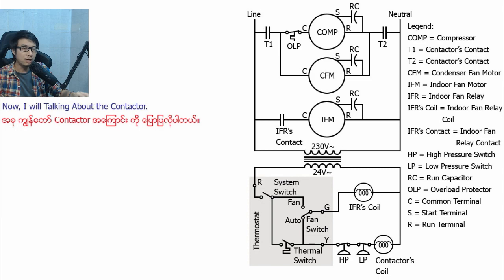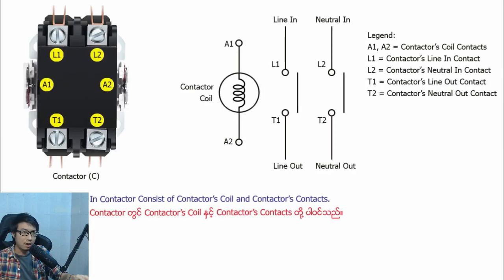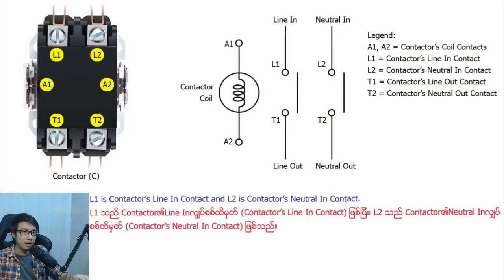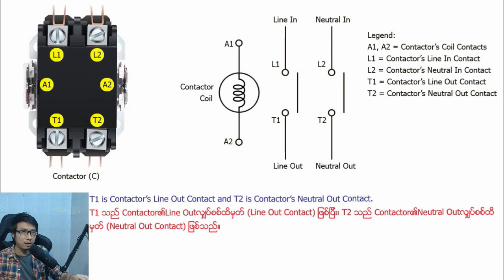Now I will talk about the contactor. The contactor consists of the contactor coil and contactor contacts. E1 and E2 are the contactor coil contacts. L1 is the contactor line-in contact and L2 is the contactor neutral-in contact. T1 is the contactor line-out contact and T2 is the contactor neutral-out contact.